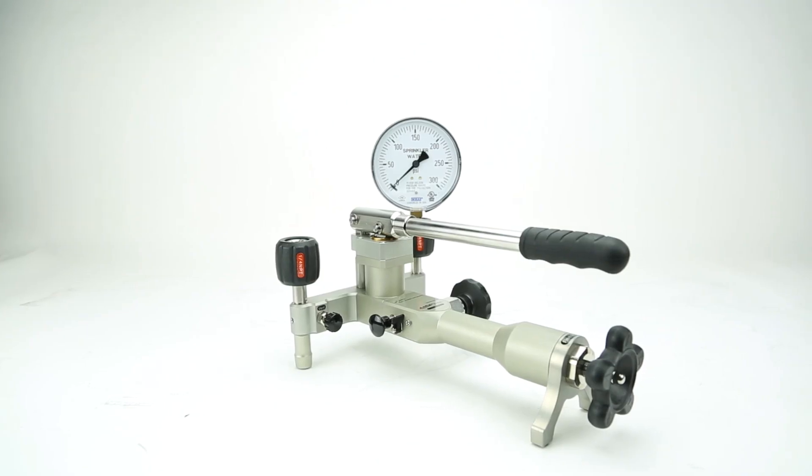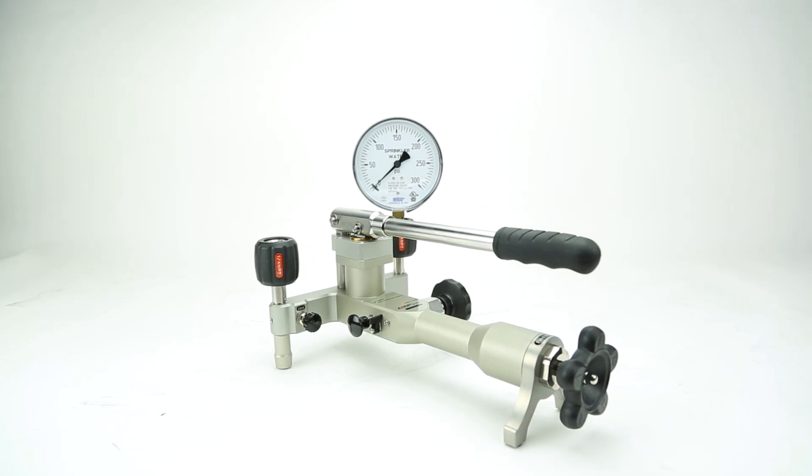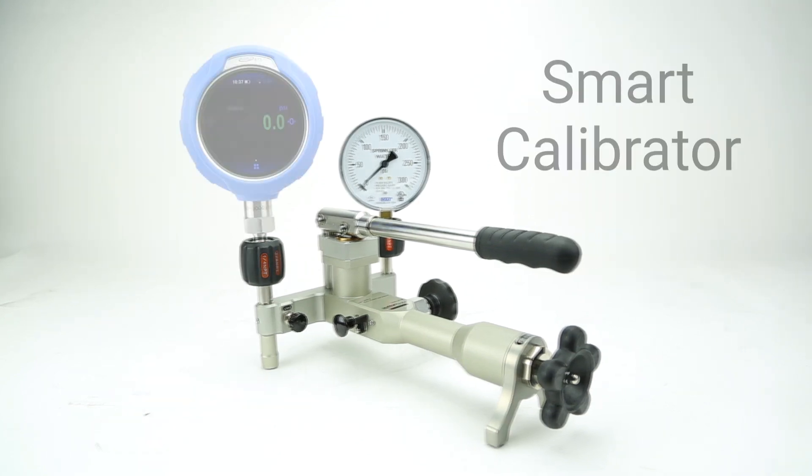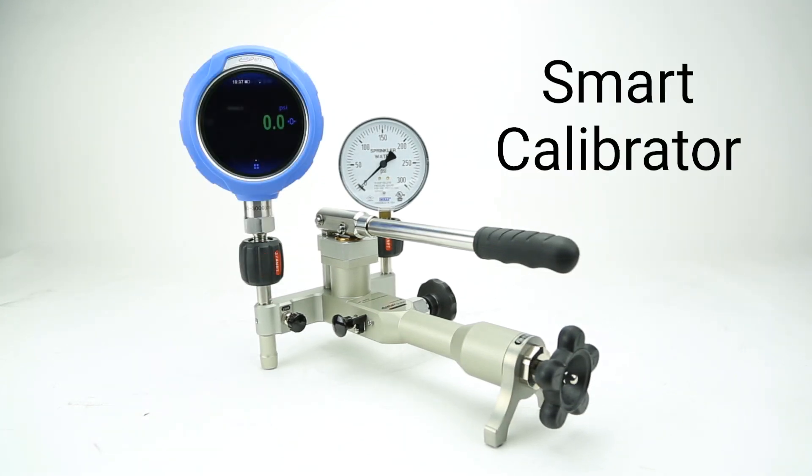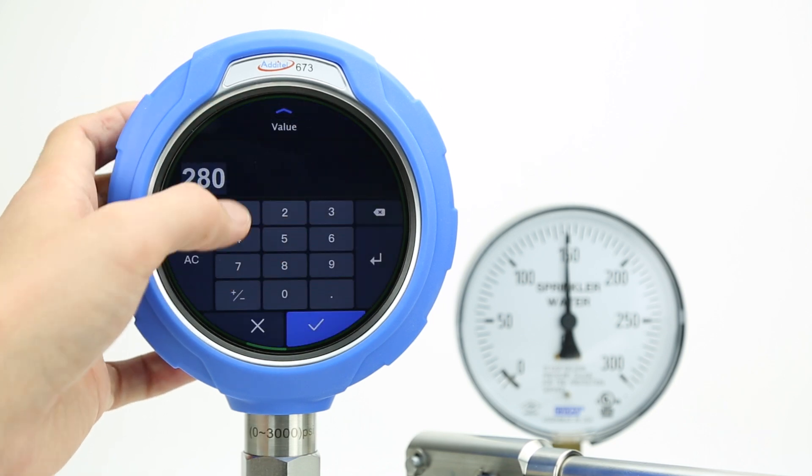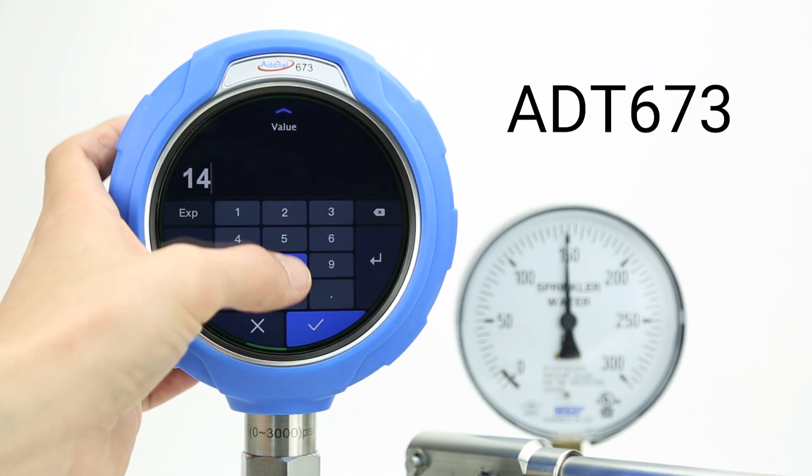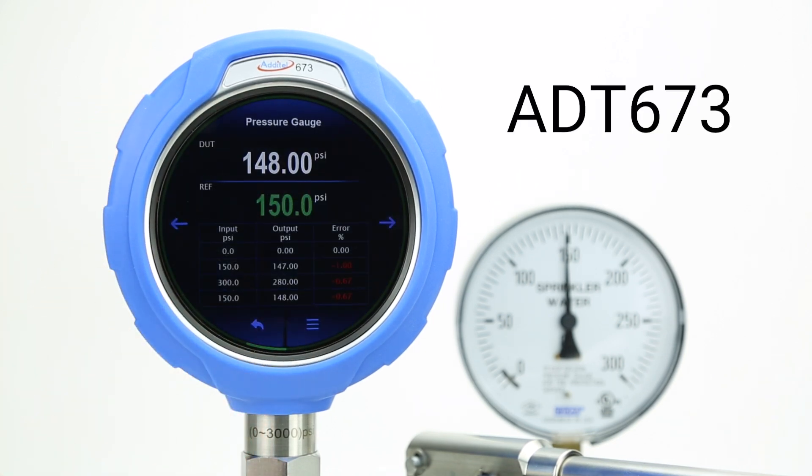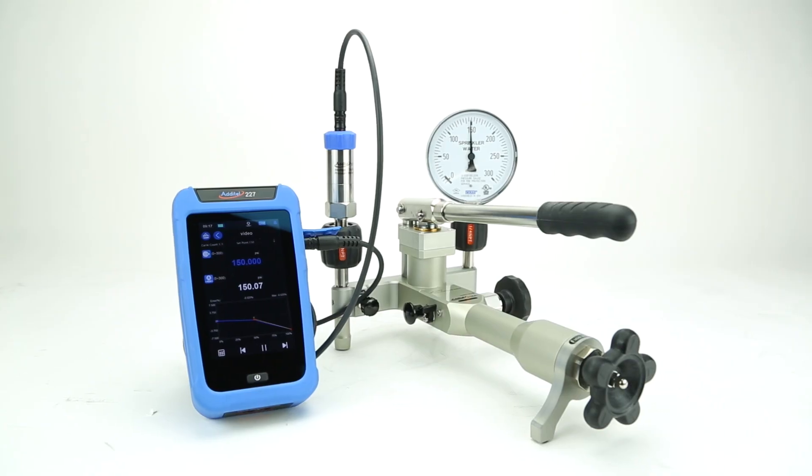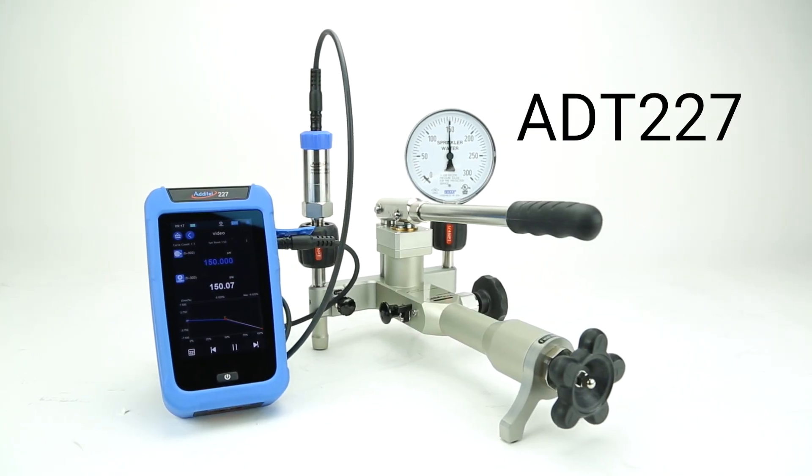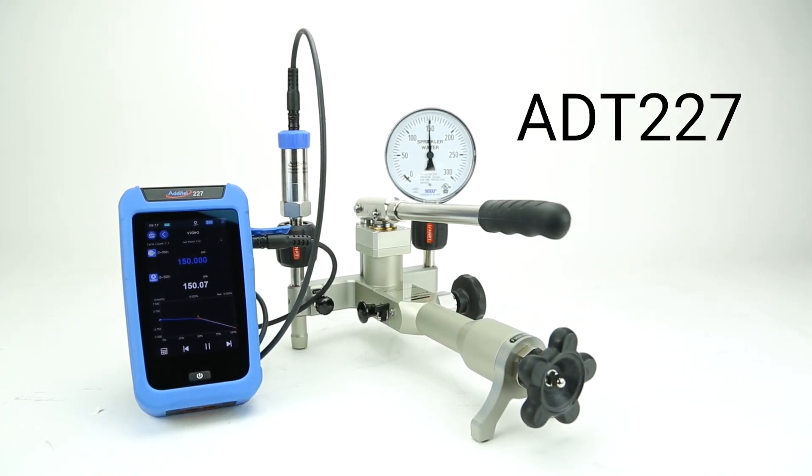Now let's look at some other ways this calibration could have been completed. Instead of manually writing the test results down, a smart calibrator could have been used. This could be a reference gauge calibrator such as the Aditel 673, which allows the user to enter the DUT inputs at each set point, or a multi-function calibrator like the Aditel 227 that would record readings from a reference module.